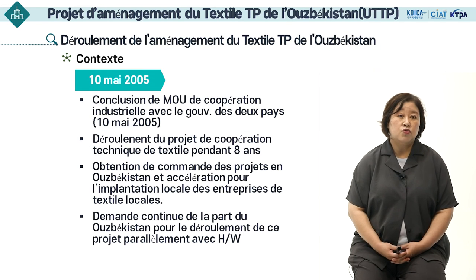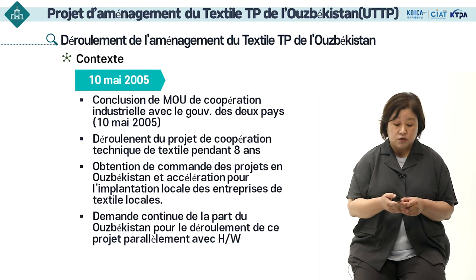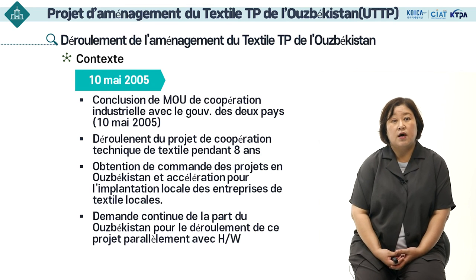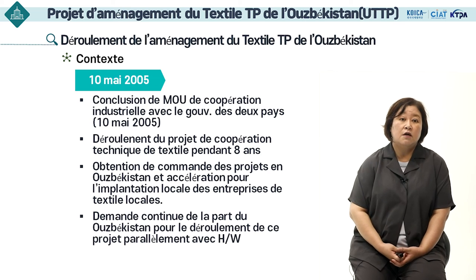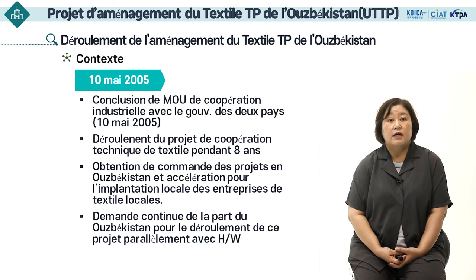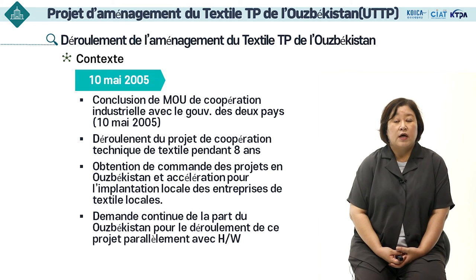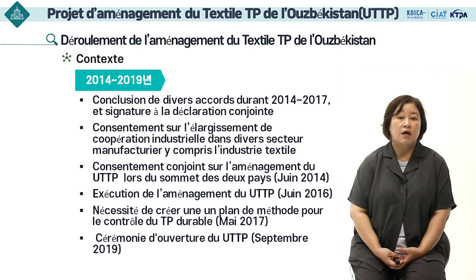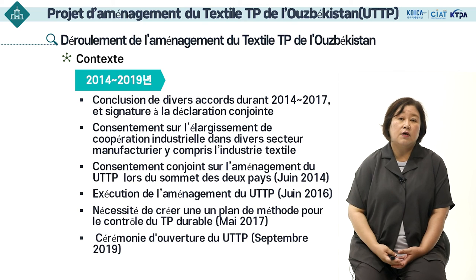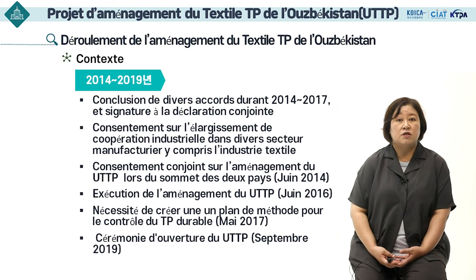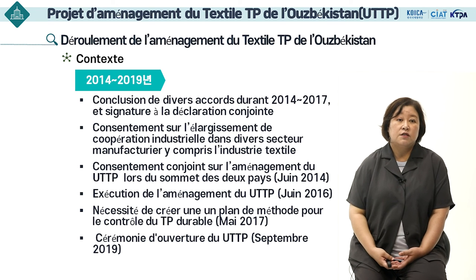L'avancement du projet du textile technoparc de l'Ouzbékistan s'est déroulé sur une très longue période. Ce projet remonte à 2005, quand les deux parties ont signé un protocole d'entente sur la coopération industrielle entre les deux gouvernements, et depuis lors, nous avons continué à mener des projets de coopération technique industrielle pendant environ huit ans. Alors que divers accords ont été conclus entre 2014 et 2018, la construction du textile technoparc de l'Ouzbékistan a été menée à partir de 2016. En septembre 2018, la cérémonie d'ouverture a eu lieu et le projet de soutien est maintenant en cours.